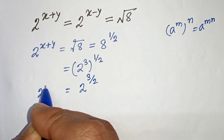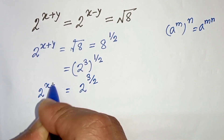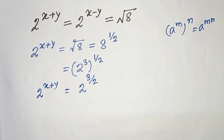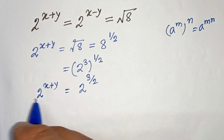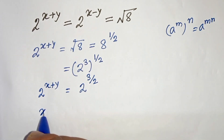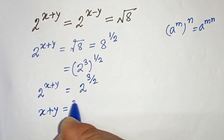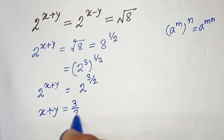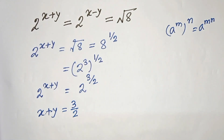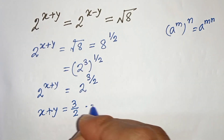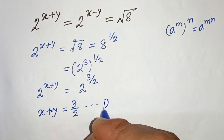On the left hand side we have 2 to the power x plus y. Now if we compare both sides, we will get x plus y is equals to 3 by 2. This is our equation 1.